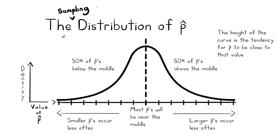The central limit theorem tells us the pattern we would see: a bell-shaped curve where the height of the curve represents the tendency that P-hat will be a certain value. Right in the middle are the most likely values of P-hat. The higher the values of P-hat get, the less likely; and the lower the values of P-hat, the less likely. That's true about any variable with a normal distribution.